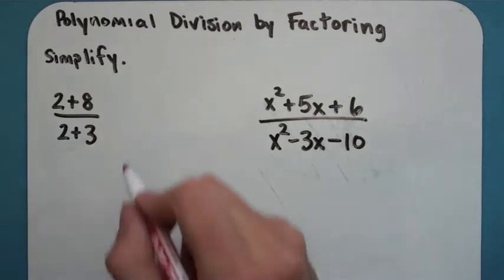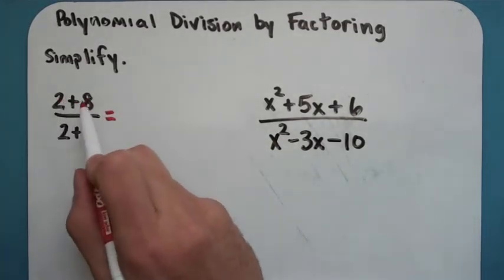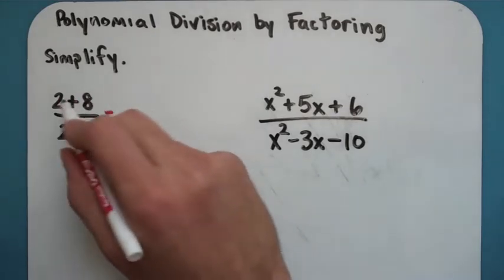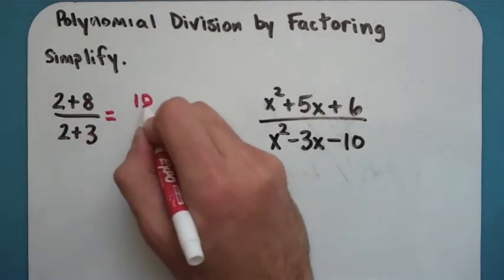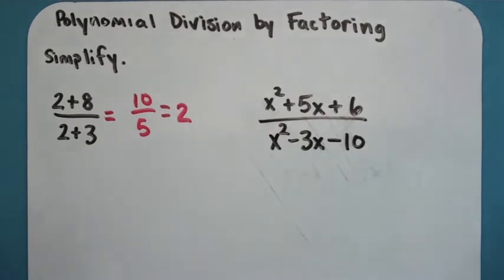So this first problem here is an old one. This is something you've been doing for years. All you would do here is add the top and add the bottom, so you end up with 10 over 5, which is equal to 2. That should make sense to pretty much everybody.